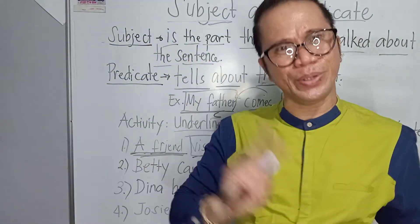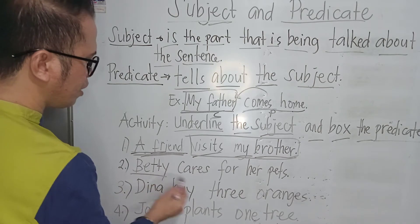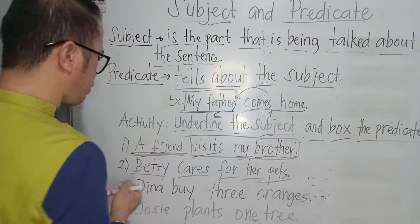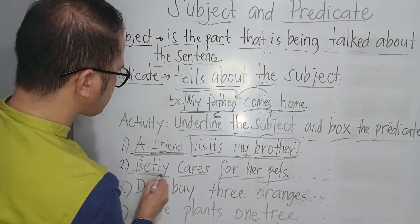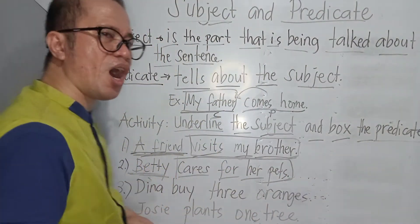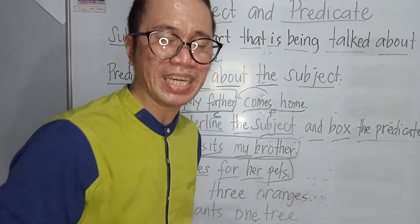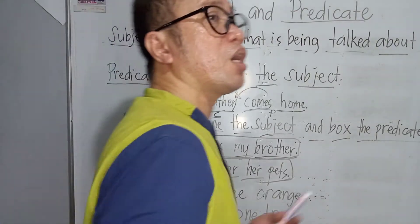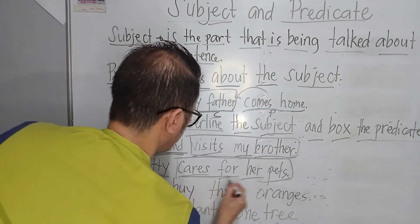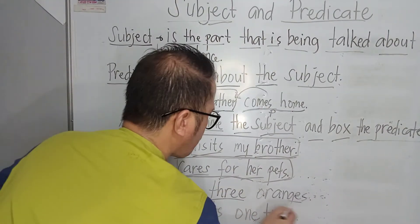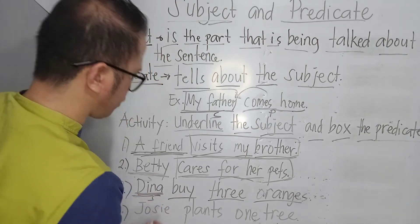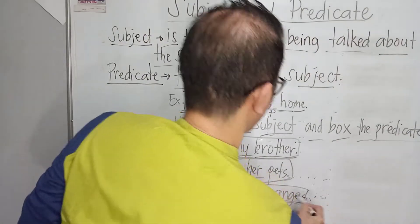Number two: 'Baby cares for your feet.' The word 'baby' is our subject, and 'cares for your feet' is our predicate. Next, number three: 'Dina buys three oranges.' From this sentence, we know that 'Dina' is our subject and 'buys three oranges' is our predicate.